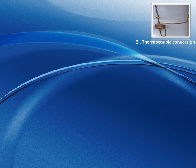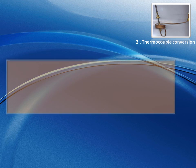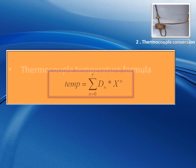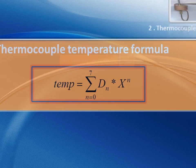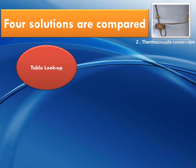Let's see the second example: thermocouple temperature conversion. Thermocouple analog data values given from the thermocouple sensors are first converted into digital data. These digital data are then processed according to the formula displayed, into temperature readings. In few words, this formula translates data values into temperature readings. Four different solutions are compared to process this formula.